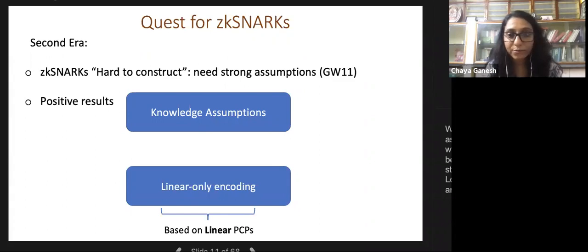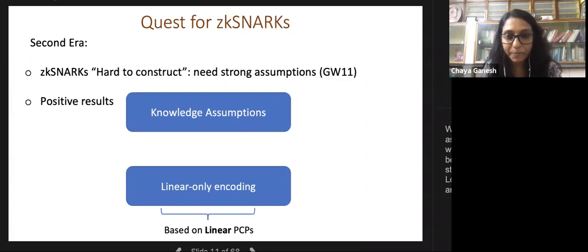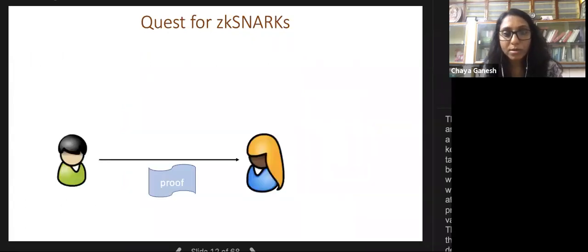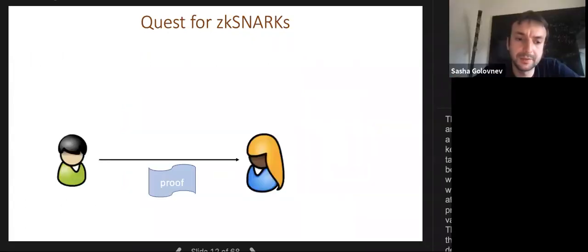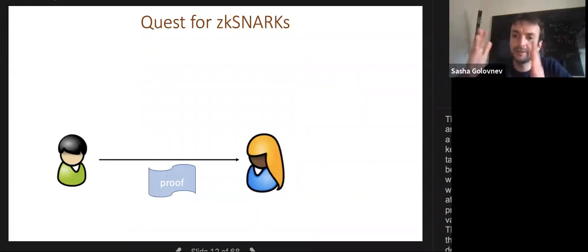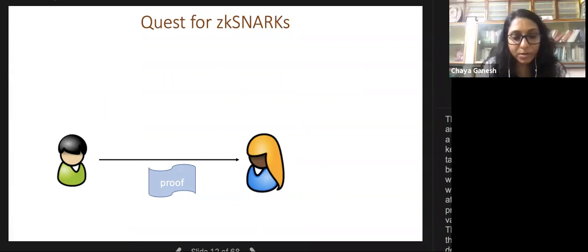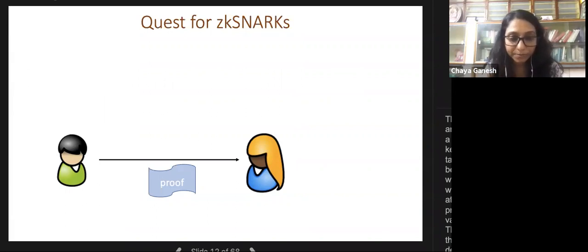These constructions were later re-characterized as being based on linear PCPs, which don't need the full power of PCP. In a linear PCP, the verifier's queries are vectors and what it receives is the inner product of the proof string with the query vector.